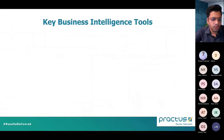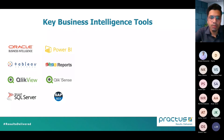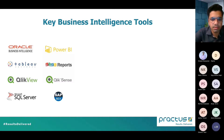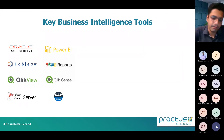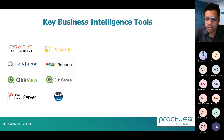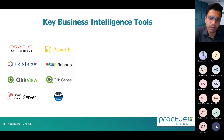What are the key business intelligence tools available in the market? A few visible on screen include Oracle, Power BI, Tableau, Zoho Reports, Qlik View, Qlik Sense, SQL Server, SAP — which has its own analytics format — and Oracle as a business intelligence tool. Based on the current IT infrastructure, ERPs, or systems an organization has deployed, it can decide which tool is better by doing a proper assessment and moving forward to implement these tools.